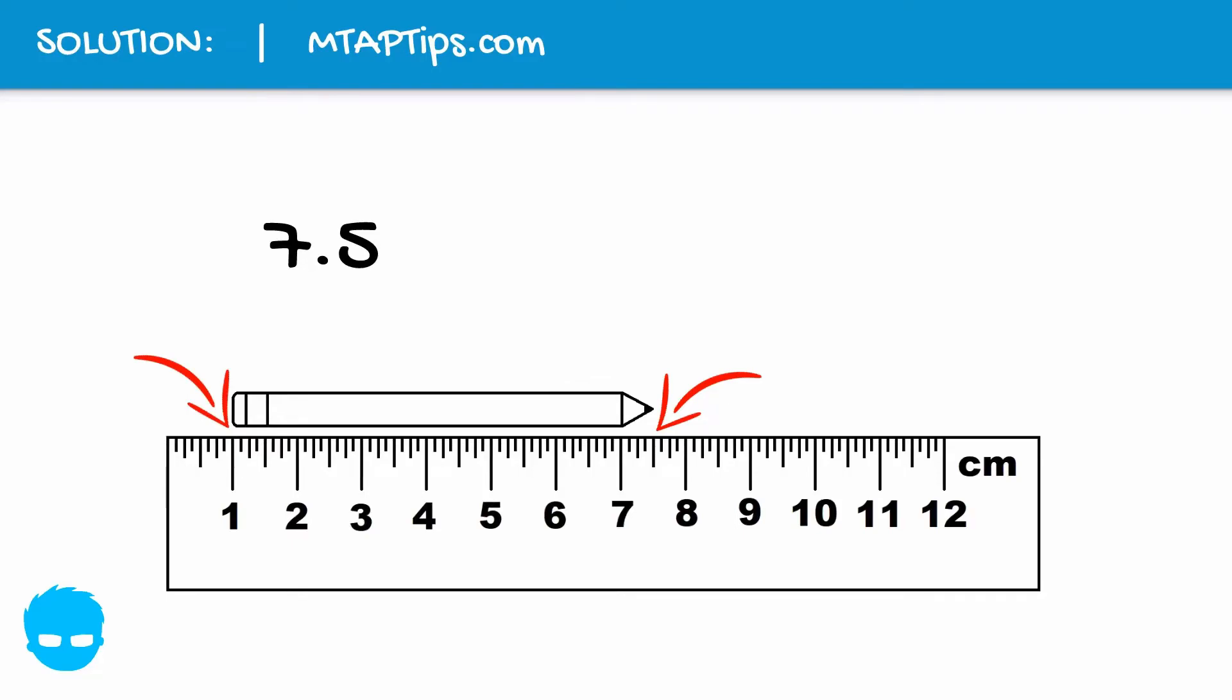Which means from 1 to 2, that is equal to 1 cm. And from 1 to 3, that's 2 cm, and so on.